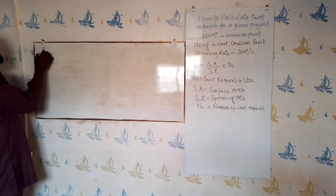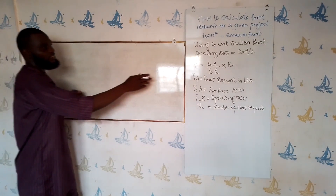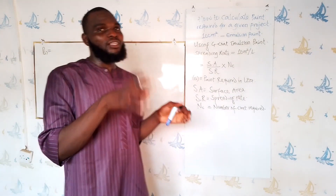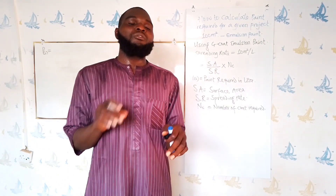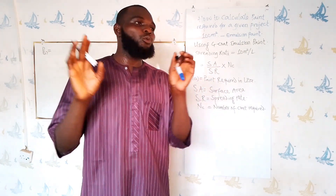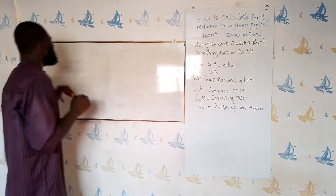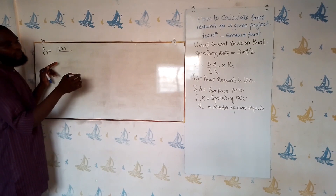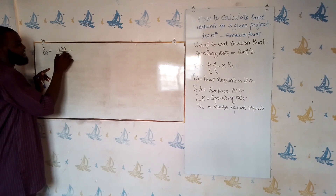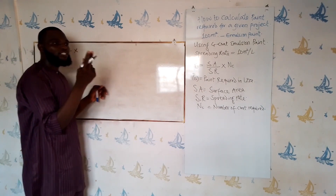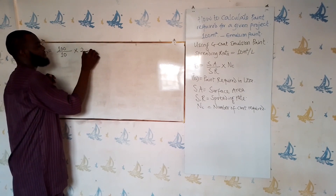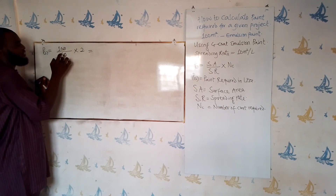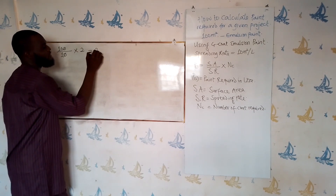Our paint required in litres: what is our surface area? It is the area we want to paint — the net area. If it is a room, you calculate the area of each wall added together, then remove the openings. So we have 100, over our spreading rate of 10, times the number of coats — let's assume we are painting two coats. That gives us 100 divided by 10, times 2, which equals 20 litres.